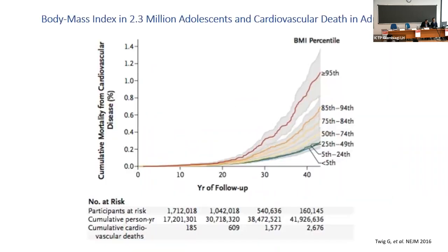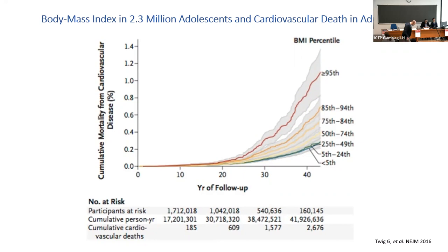Morbidity is also associated with mortality. In longitudinal studies, authors demonstrated that people who are obese in adolescence have a higher chance of dying from cardiovascular disease compared to people who are normal weight in adolescence. Therefore, if you are exposed to overweight and obesity in adolescence, independently from confounders, you are at higher risk of dying from cardiovascular disease.